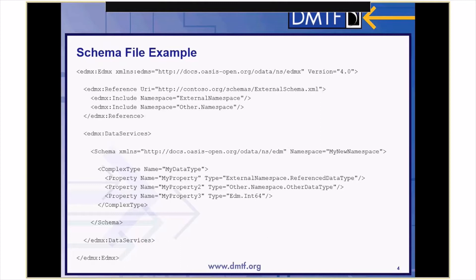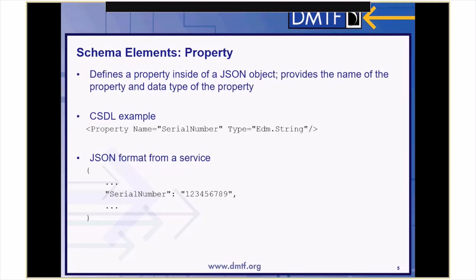In the following slides, we'll go over each of the constructs that can be found inside the schema body in detail. A property element is used to define a property inside of a JSON object. It provides the string name of a property and the data type of the property. In this CSDL example, a property named serial number is defined, and its data type is set to EDM dot string, which is the primitive string type. From this, we'd expect to see a property in the JSON body named serial number, and its data will be a string — in this example, the string 123456789.